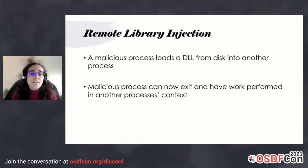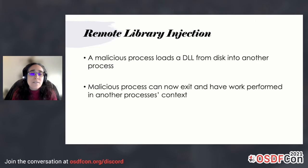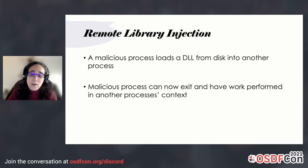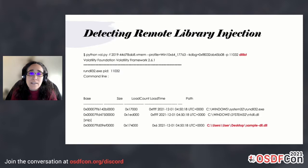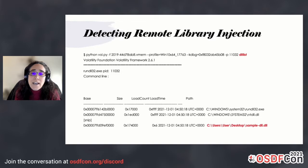Sometimes you have remote library injection. This is where a malicious process loads a DLL from disk into another process. The malicious process can then exit after making the proper calls to execute the code in the target process. You can find this using DLL list within Volatility, and it very easily shows up there.